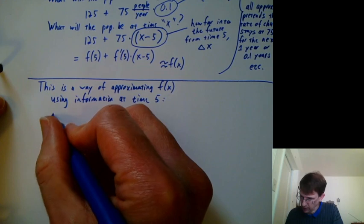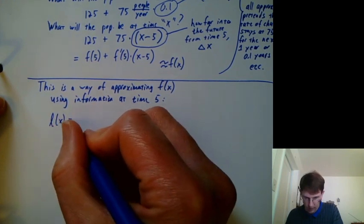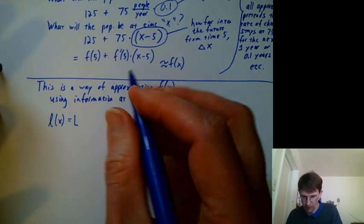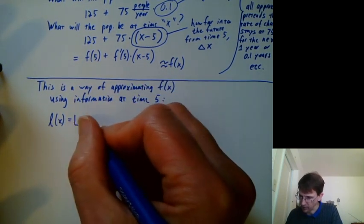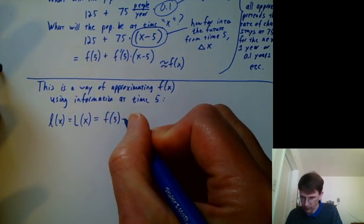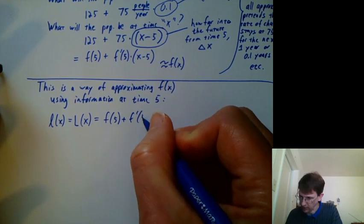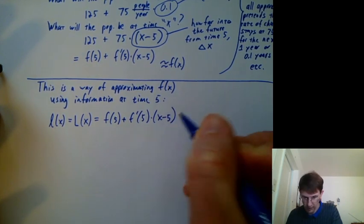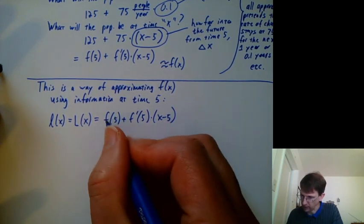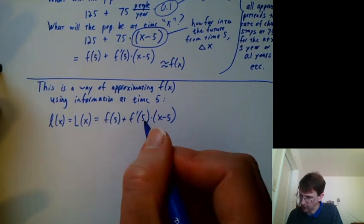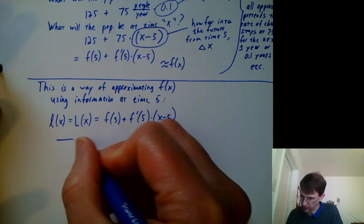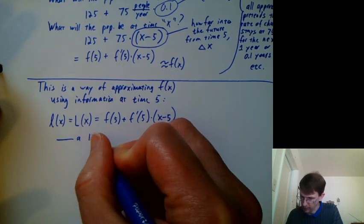And our book calls it l of x with a lowercase l. When I type a lowercase l, it's hard to tell apart from a 1 or sometimes a capital I. So I like to use an uppercase l because that's easy to tell apart. And we're saying that's f of 5 plus f prime of 5 times x minus 5. So this is a linear function. We've got an intercept. And then a slope times x minus some initial value.